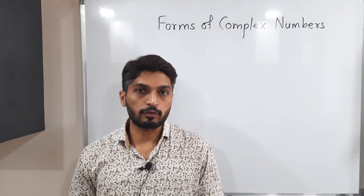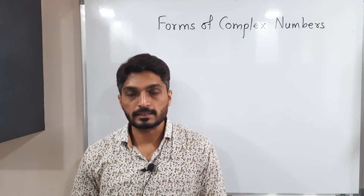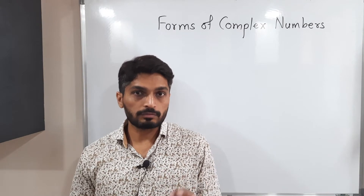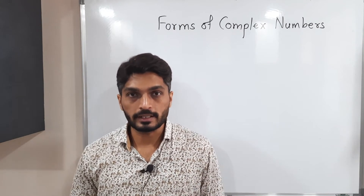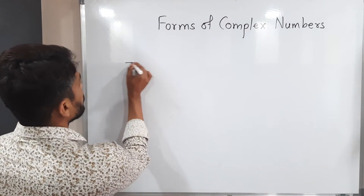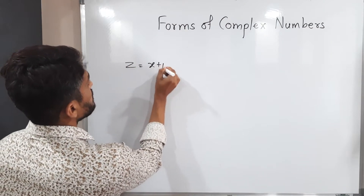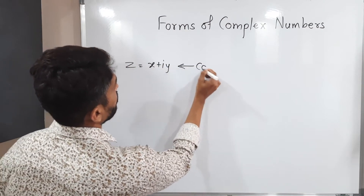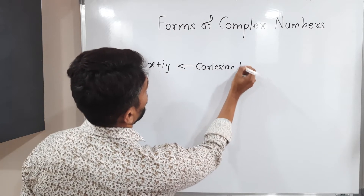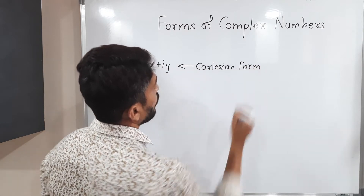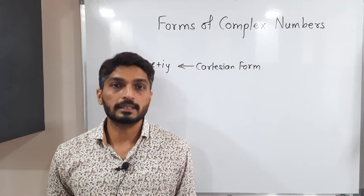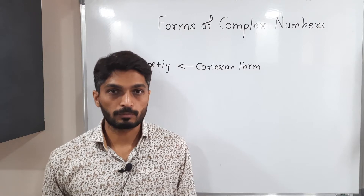Let us discuss three forms of a complex number. Any complex number can be expressed in three different ways. One form we have already seen — that is Cartesian form. So Z is equal to X plus iY. This is called Cartesian form. X is the real part and Y is the imaginary part.